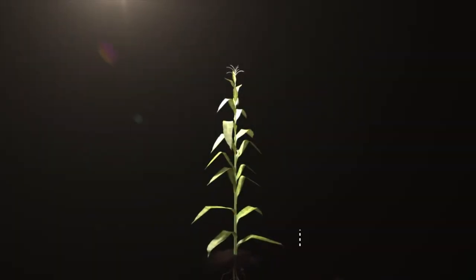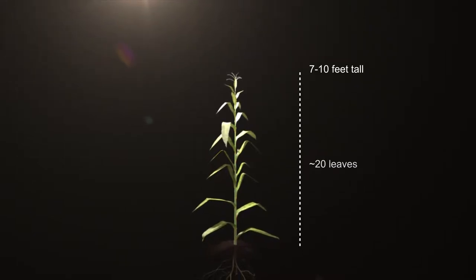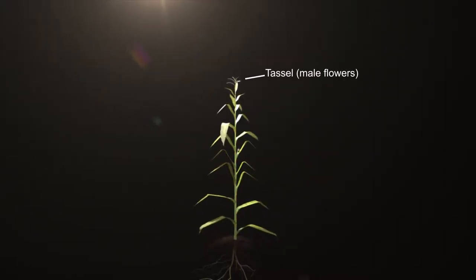Corn plants grow on average 7 to 10 feet tall with roughly 20 leaves. A single plant has male flowers at the top in the tassel and female flowers in the ear midway down the stalk.